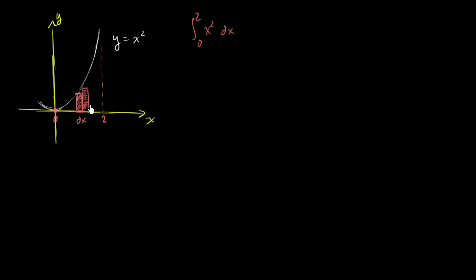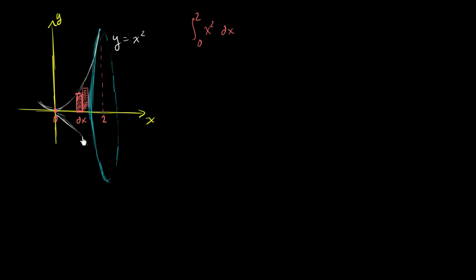Now we're going to apply that same idea, not to find the area under this curve, but to find the volume if we were to rotate this curve around the x-axis. This is going to stretch our powers of visualization. So let's think about what happens when we rotate this thing around the x-axis. If you rotate it and look from a little bit to the right, you get kind of a base that looks something like this. Between 0 and 2 it looks like one of those pieces from the game Sorry, or a kind of weird hat. Let me shade it in a little bit — it looks something like that.